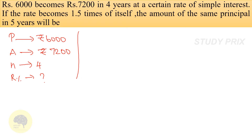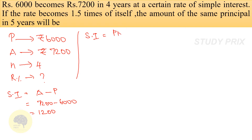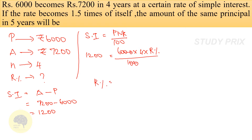So we have to find the rate percentage first. For this we find the simple interest, which is amount minus principal: 7200 minus 6000 = 1200. Using SI = PNR/100: 1200 = 6000 × 4 × R/100. Therefore rate of interest percentage = 1200 divided by 60 multiplied by 4, which gives 5%.